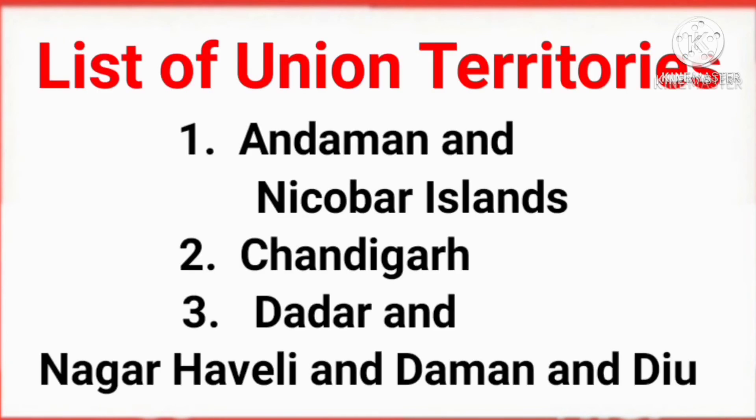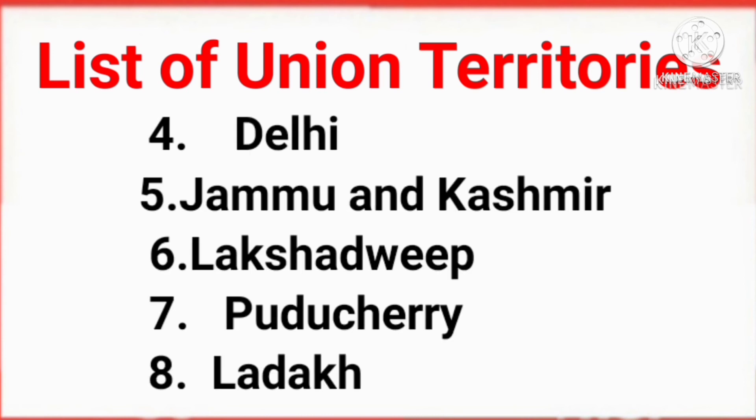Now list of union territories: Andaman and Nicobar Islands, Chandigarh, Dadra and Nagar Haveli and Daman and Diu, Delhi, Jammu and Kashmir, Lakshadweep, Puducherry, Ladakh.